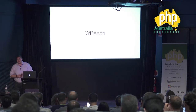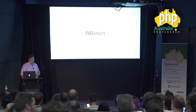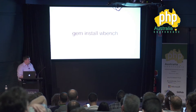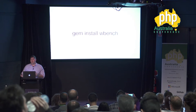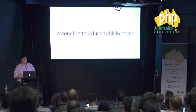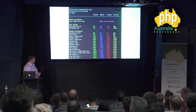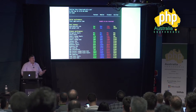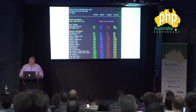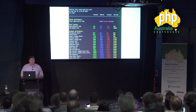WBench is a more granular client-side tool that helps you understand how much time you spend on SSL negotiation, DNS lookups, and which assets are slowest. It uses a real Chrome instance via Chrome Driver to give granular client-side performance insights. Install with 'gem install wbench', install Chrome Driver, then run 'wbench' with your URL. It uses the W3C Navigation Timing API and Resource Timing API to break down exactly what's happening — DNS lookup time, connection time, time to first byte, DOM interactive, and when the application becomes usable.